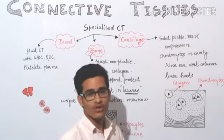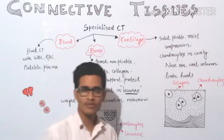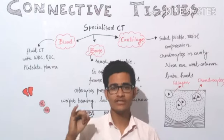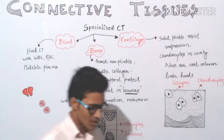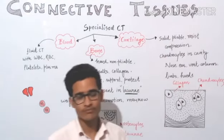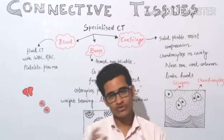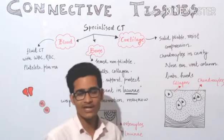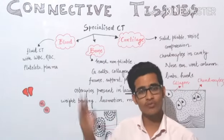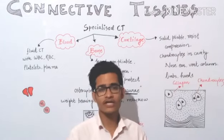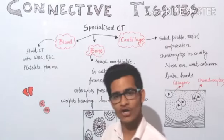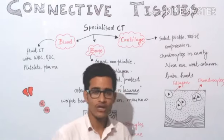Specialized connective tissues are some sort of special cells or special tissues. They are very abundant in our body. If we talk about fluid connective tissue, blood is the major tissue. If we talk about solid connective tissue, bones and cartilage are major tissues. This is the body's mostly weight, which is why specialized connective tissue is very abundant compared to epithelial tissue, neural tissue, or muscular tissue.